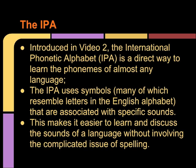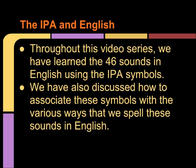Introduced in video 2, the International Phonetic Alphabet is a direct way to learn the phonemes of almost any language. The IPA uses symbols, many of which resemble letters in the English alphabet, that are associated with specific sounds. This makes it easier to learn and discuss the sounds of a language without involving the complicated issue of spelling. Throughout this video series, we have learned the 46 sounds in English using the IPA symbols. We have also discussed how to associate these symbols with the various ways that we spell these sounds in English.